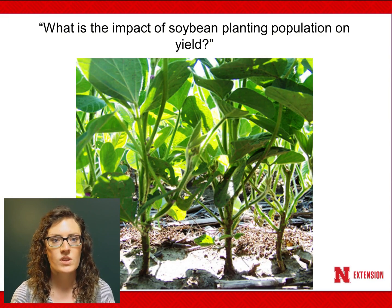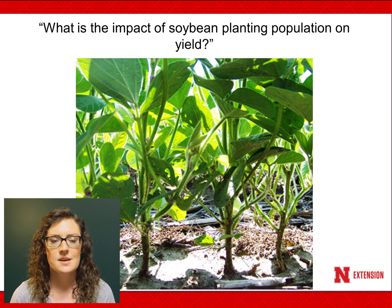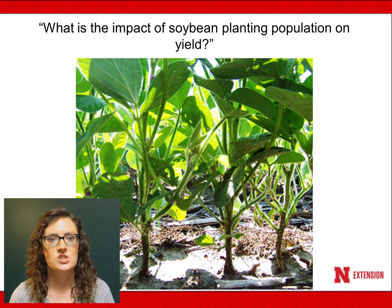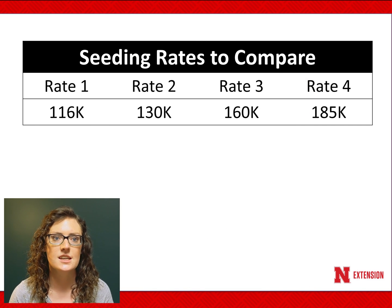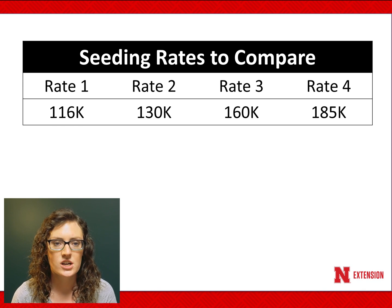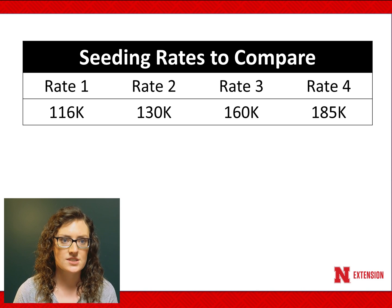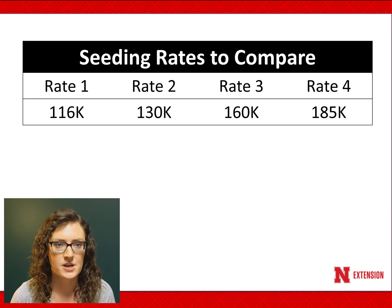Now that we've looked at the basics of on-farm research and experimental design, let's take a look at the research study we will be using in the tutorial. The research question for this study is: what is the impact of soybean planting population on yield? We want to compare four soybean seeding rates: 116,000 seeds per acre, 130,000 seeds per acre, 160,000 seeds per acre, and 185,000 seeds per acre.